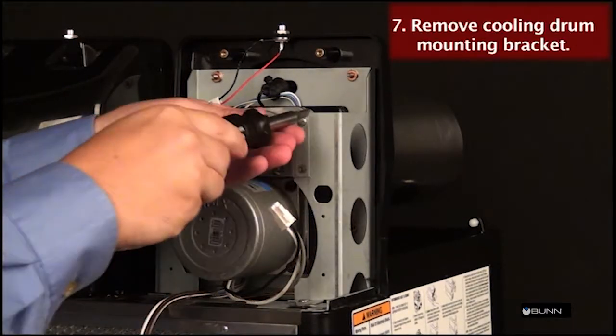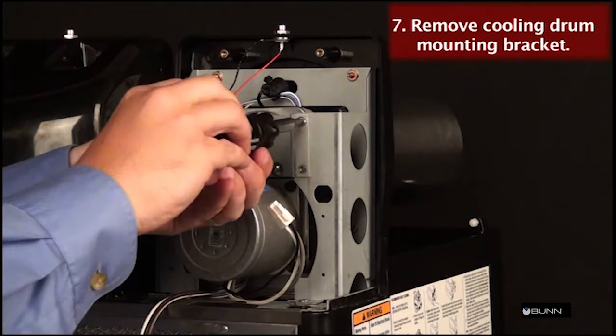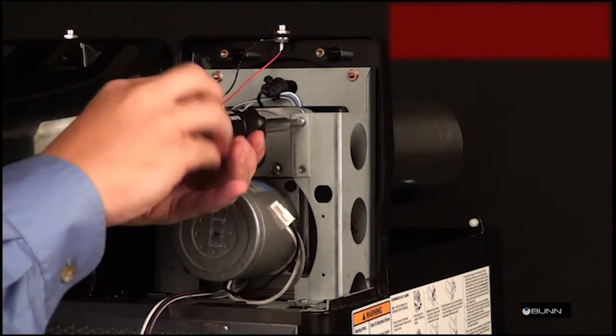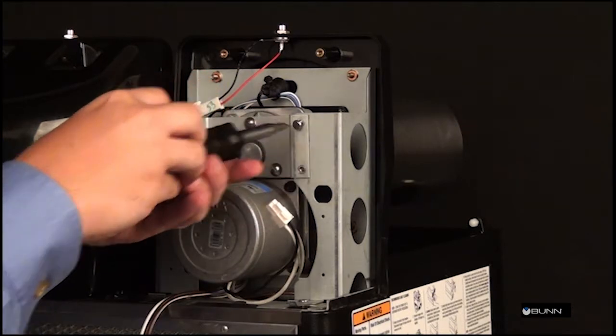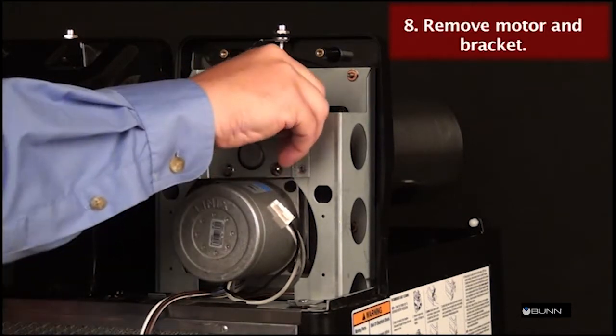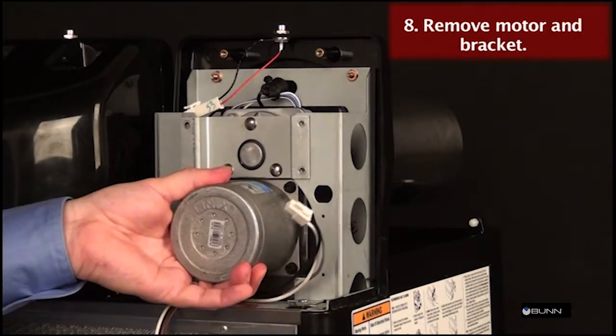Remove the remaining locking screws securing the auger motor to the mounting bracket. Remove motor with mounting bracket from the machine.